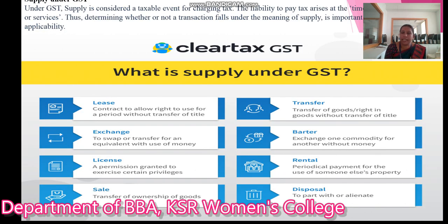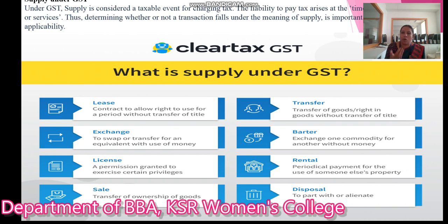Next, supply under GST. Under GST, supply is considered a taxable event for charging the tax. What is supply under GST? Under GST, supply includes lease, exchange, license, sale, transfer, barter, rental, and disposal.